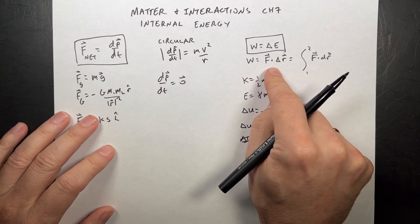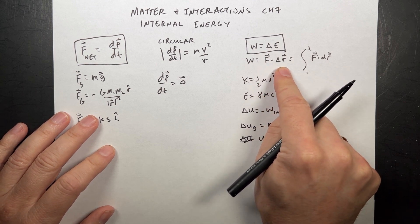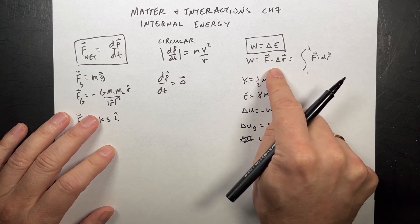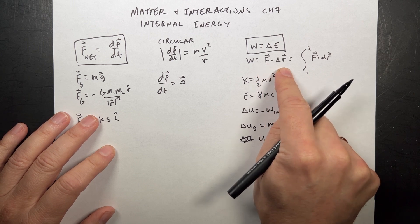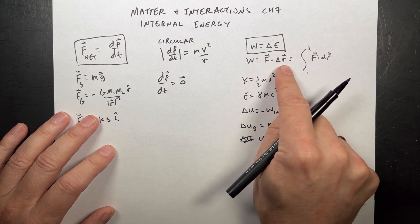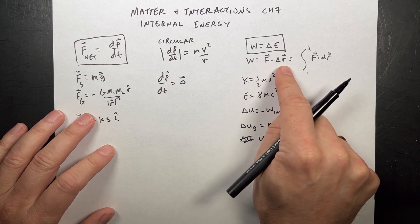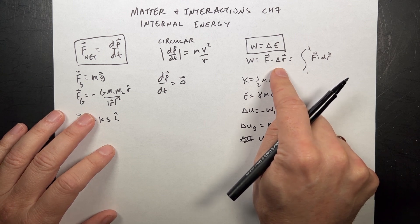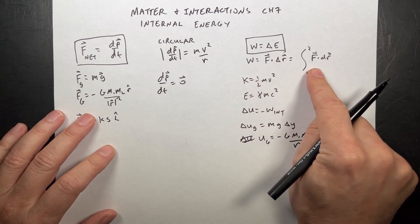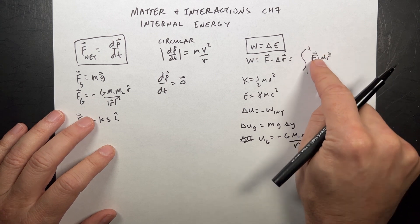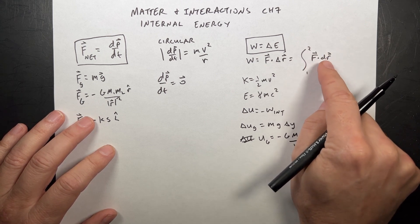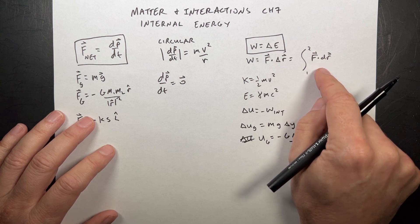We define the work done on an object as f dot delta r, the dot product. That's if the force is constant and displacement is constant. If either changes, you have to do that as an integral. We choose situations that are manageable, like straight lines.